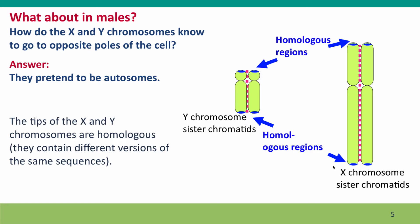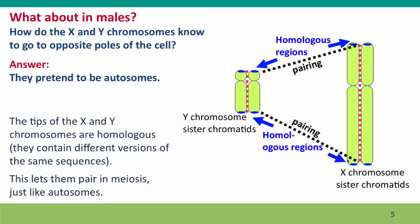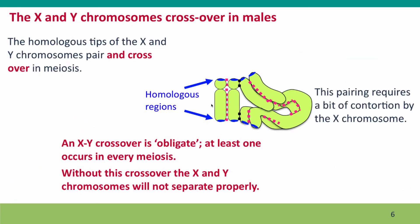At the short end of the Y chromosome are sequences that are homologous to sequences at the short end of the X chromosome. And at the long end of the Y chromosome are sequences that are homologous to sequences at the long end of the X chromosome. These are different versions of the same sequences in exactly the same way that different alleles on homologous autosomes are different versions of the same sequences. This homology allows these sequences to pair in meiosis in the same way that the autosomes pair. The tips pair, as shown in this diagram. This pairing requires a bit of effort on the part of the X chromosome because it's so much longer than the Y chromosome, but at this scale the chromosomes are actually fairly flexible, so the ends are able to pair just like autosomes.